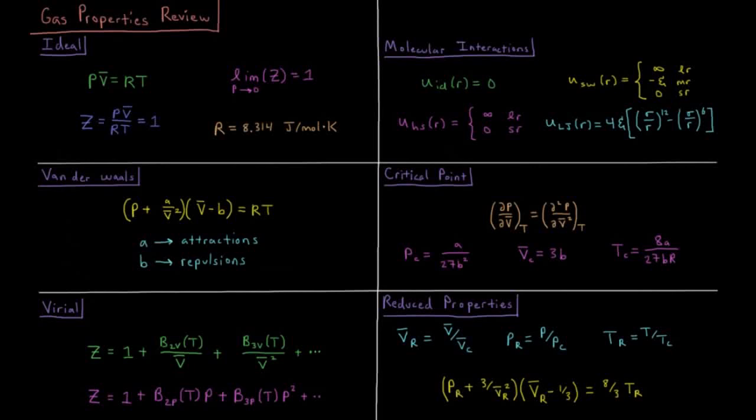This video is a review of the gas properties chapter in the chemical thermodynamics and kinetics playlist. We start with the ideal gas equation of state from general chemistry where PV equals nRT or PV bar equals RT, where V bar is the molar volume, the volume divided by the number of moles.